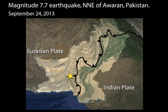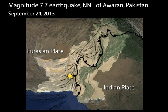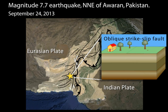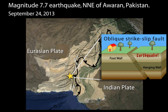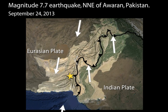These motions typically result in north-south to northeast-southwest strike-slip motion, as shown in this generalized map. The September 24th magnitude 7.7 earthquake in south-central Pakistan occurred as the result of oblique strike-slip motion at shallow crustal depths. The event occurred within the transition zone between the northward subduction of the Arabia plate beneath the Eurasia plate and the northward collision of the India plate with the Eurasia plate.